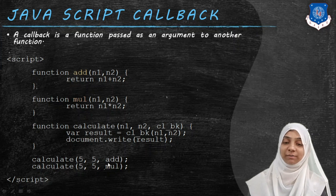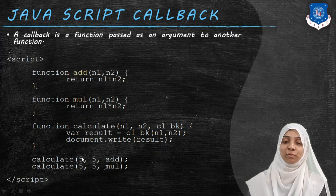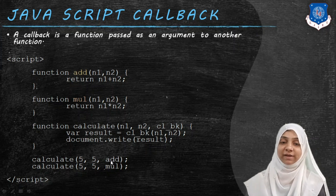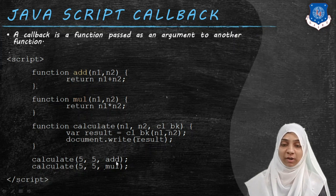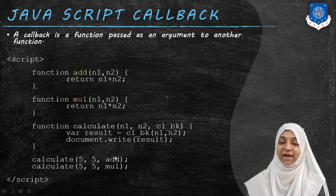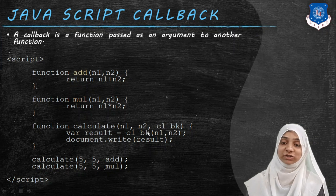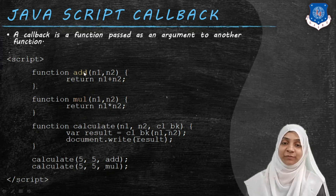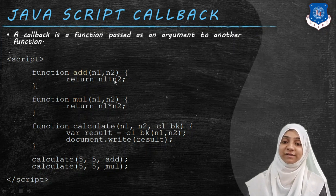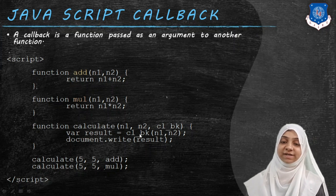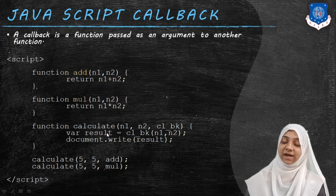To call these functions, I write calculate(5, 5, add). Two arguments are 5 and 5, and since I wish to perform addition, I supply the third argument as the name of the add function. This 'add' is stored inside the callback, and the callback calls the add function with parameters n1 and n2, which are 5 and 5. So add(5, 5) is called and its result — 10 — is returned and stored inside variable result, which is then printed.